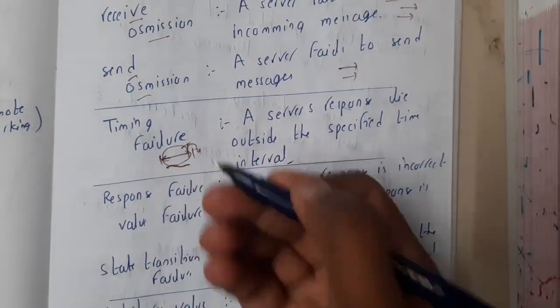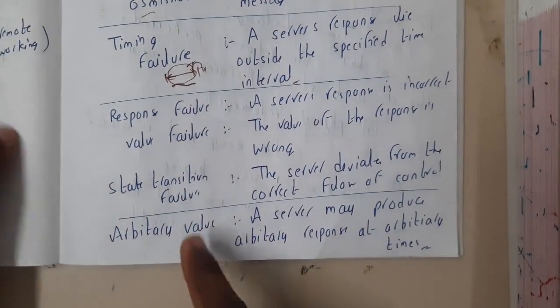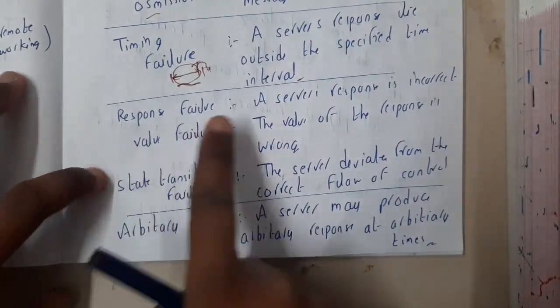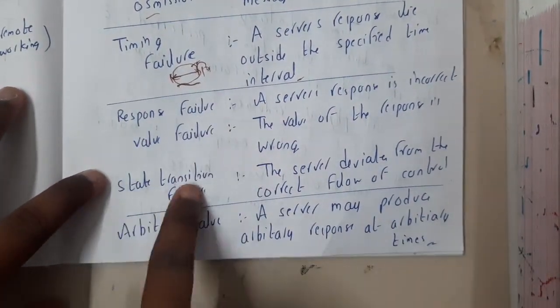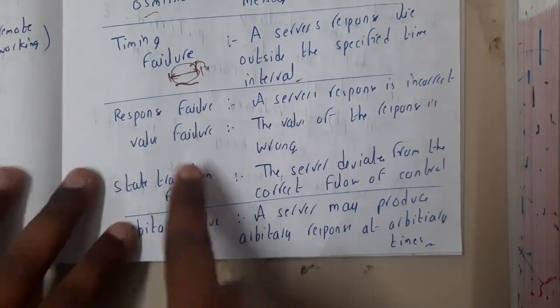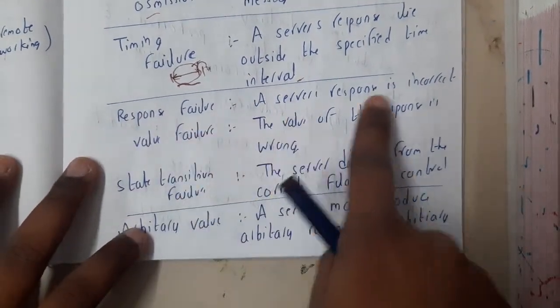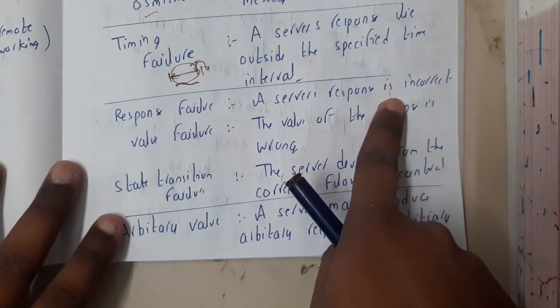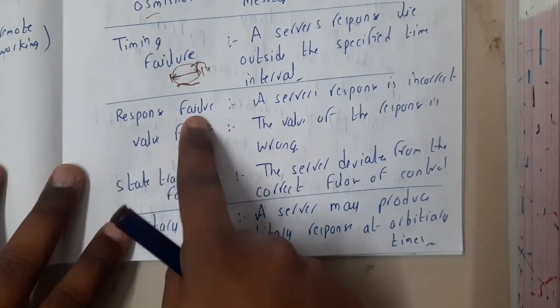Similarly, response failure, value failure, and state transition failure. These three are a bit related. Response failure: a server response is incorrect. So here we are saying response failure, so basically the server gave some wrong information.